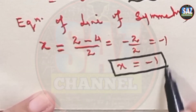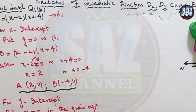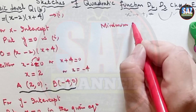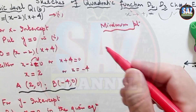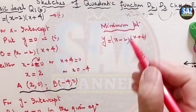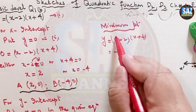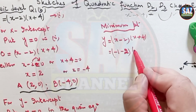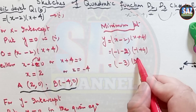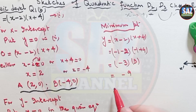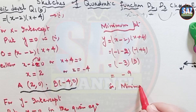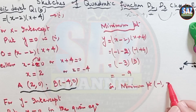We now substitute the line of symmetry value into the given equation to find the minimum point. Putting x equals minus 1 into y equals (x − 2)(x + 4): y = (−1 − 2)(−1 + 4) = (−3)(3) = −9. So the minimum point is (−1, −9).